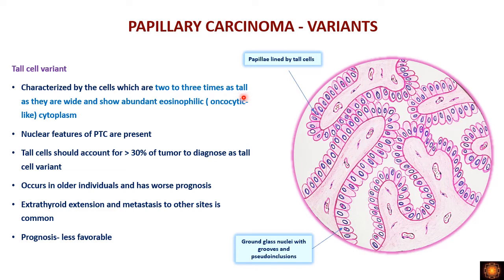The tall cell variant has tumor cells that are two to three times as tall as they are wide, with abundant eosinophilic cytoplasm. The nucleus shows typical features of conventional PTC — ground glass nuclei, inclusions, and grooving. It is called the tall cell variant when tall cells account for more than 30 percent of the tumor. This variant is more common in elderly individuals and has a worse prognosis, presenting with extrathyroidal extension and metastasis.